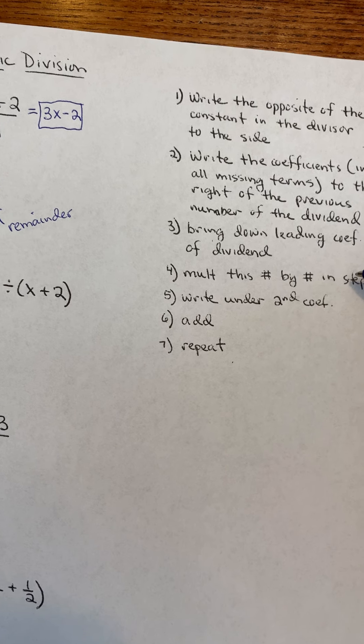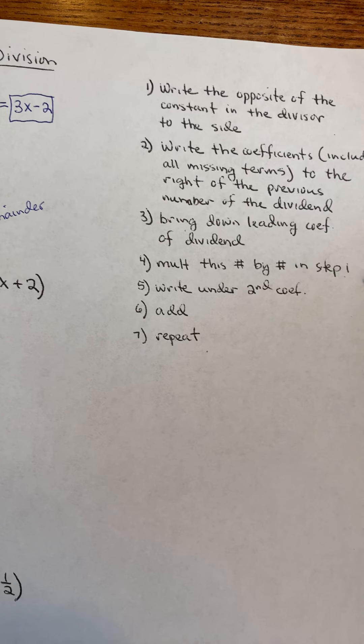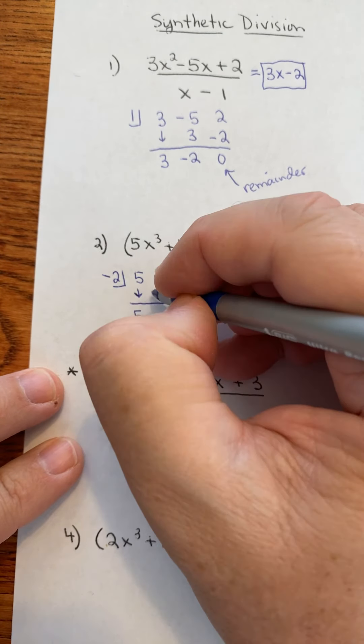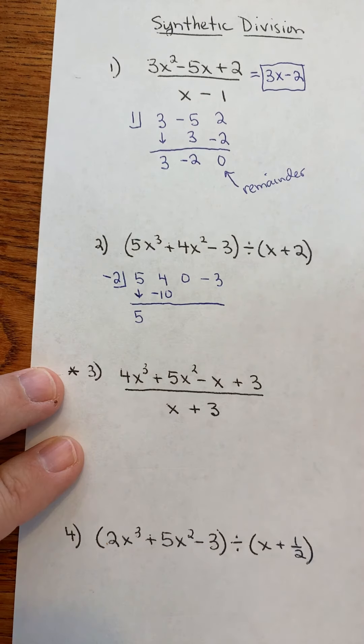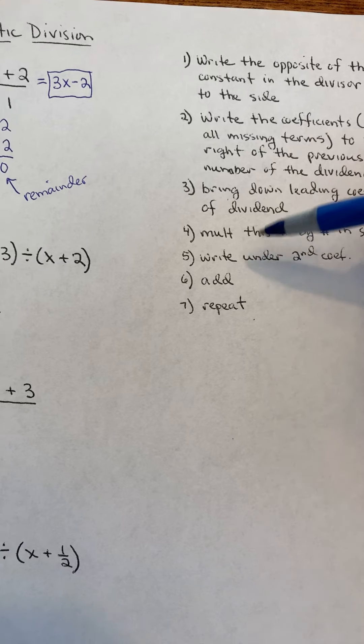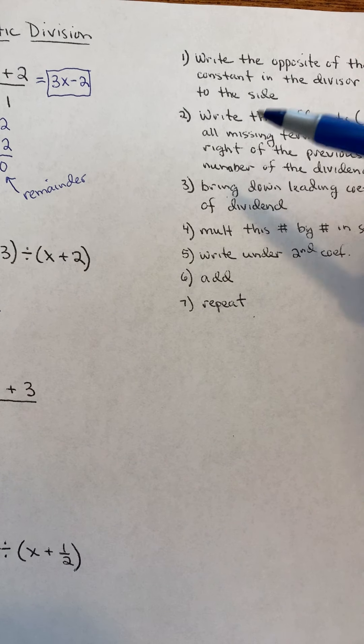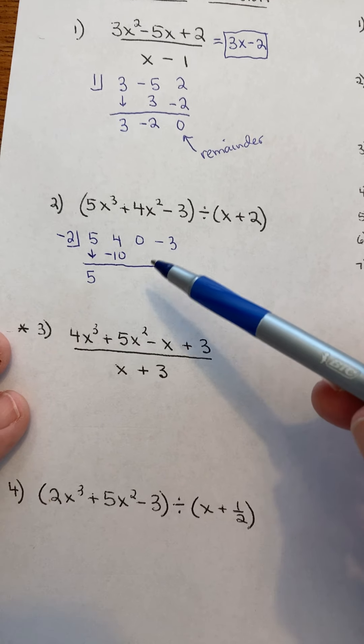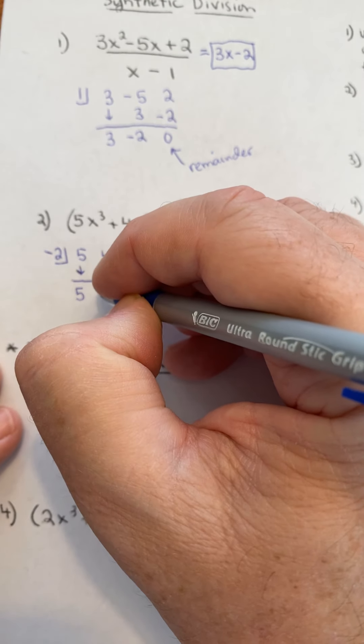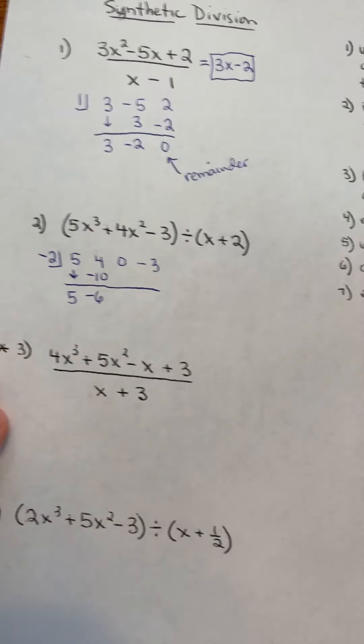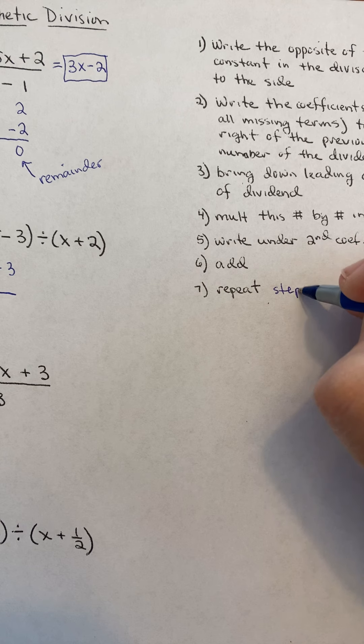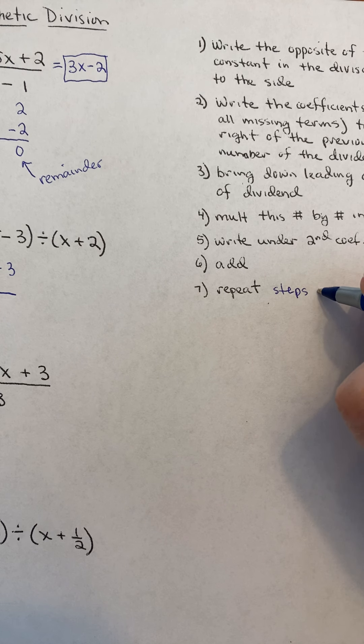Multiply this number by the number in step 1. The number in step 1 was this negative 2 over here. Negative 2 times 5 is negative 10. Write down underneath the second coefficient. I already did that. Add these two numbers up. So, 4 plus negative 10 is a negative 6. That says repeat. Now, this should be repeat steps 4 through 6.